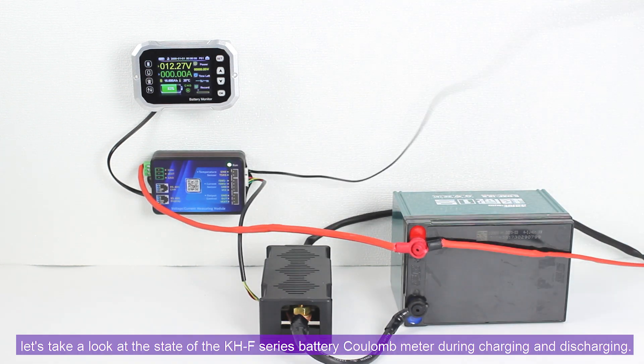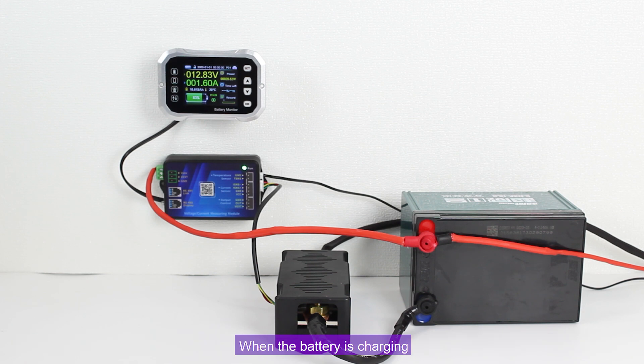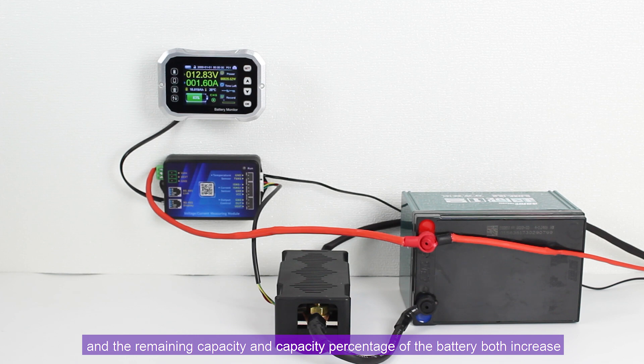Finally, let's take a look at the state of the KHF series battery kilometer during charging and discharging. When the battery is charging, the current color is green, and the remaining capacity and capacity percentage of the battery both increase.